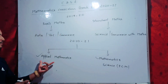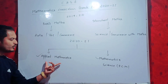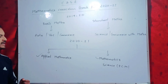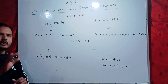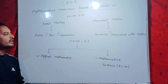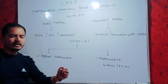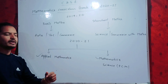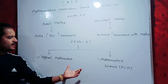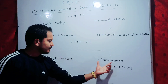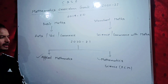First choice is applied mathematics and second choice is simply mathematics. Now what is applied mathematics? It is the new subject that CBSE included for the academic session 2020-21. Mathematics and applied mathematics are different subjects.